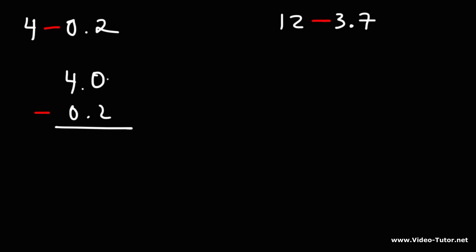Now let's subtract top minus bottom. 0 minus 2 will give us a negative number, so we can't really do that. What we need to do is borrow a 1 from the 4. The 4 turns into a 3, and then when we transfer the 1 to the 0, that becomes 10. 10 minus 2 is 8, and 3 minus 0 is 3. So the answer is going to be 3.8.